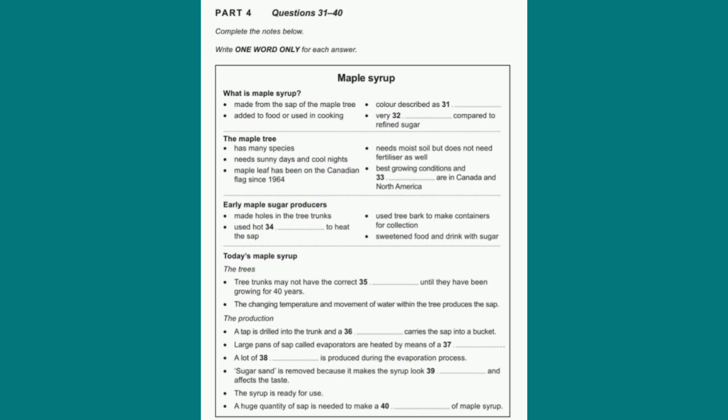There are only certain parts of the world that provide all these conditions. One is Canada — and by that, I mean all parts of Canada — and the other is the northeastern states of North America. In these areas, the climate suits the trees perfectly. In fact, Canada produces over two-thirds of the world's maple syrup, which is why the five-pointed maple leaf is a Canadian symbol and has featured on the flag since 1964.